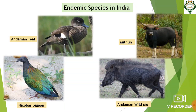Endemic species in India includes species which are only found in some particular areas, usually isolated by natural or geographical barriers. For example, the Andaman teal, which is found in the Andaman region only; the Nicobar pigeon, found in the Nicobar region only; Andaman wild pig; and Mithun, which is found in Arunachal Pradesh.